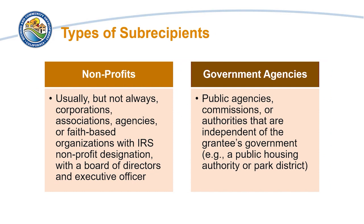Subrecipients can either be nonprofits or government agencies. Nonprofits are usually, but not always, corporations, associations, agencies, or faith-based organizations with nonprofit status, such as a 501(c)(3), with a board of directors and executive officer.